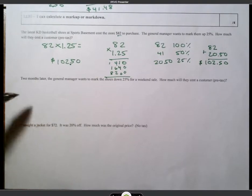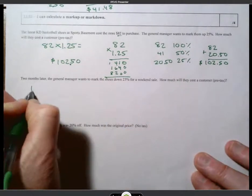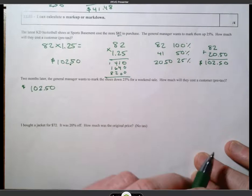two months later, the general manager wants to mark the shoes down 25% for a weekend sale. Okay? How much will they cost a customer pre-tax? So we have the new price, $102.50. We want to mark it down 25%.